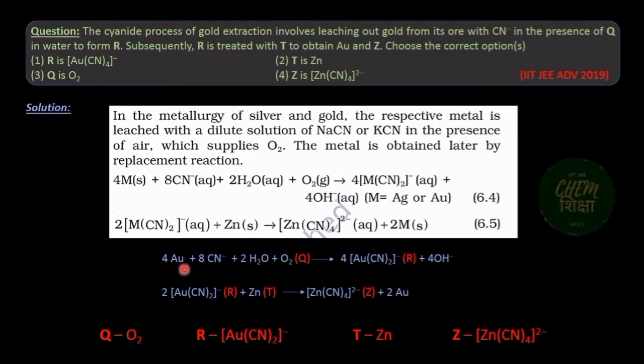So here, impure gold ore is treated with dilute solution of sodium cyanide or potassium cyanide in presence of air which provides oxygen to form a soluble complex of gold, which is then treated with zinc to obtain gold metal as a replacement reaction.